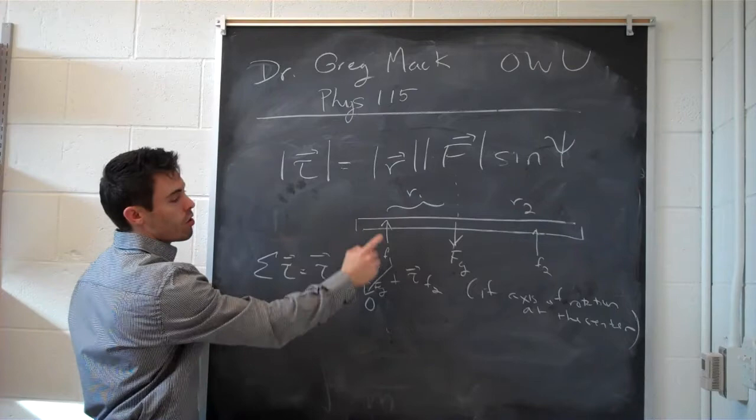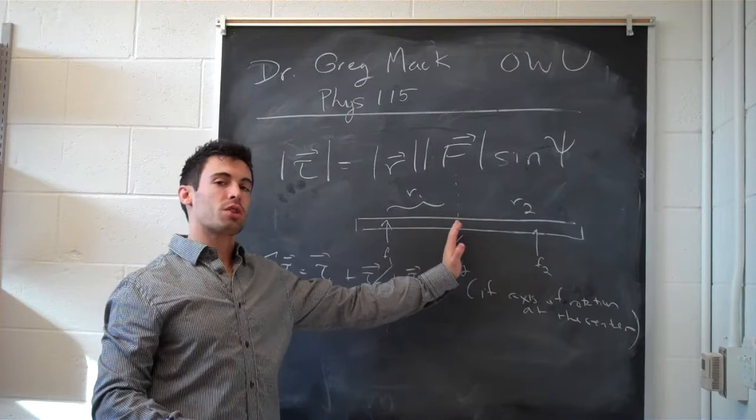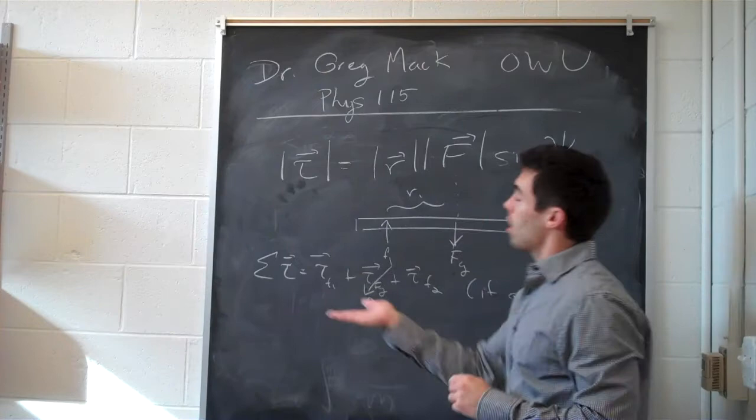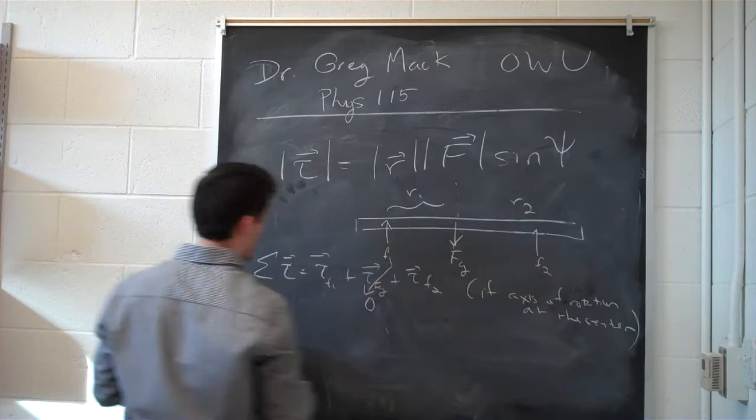So the sum of the torques equals zero, and we have to figure out what the directions of these torques are going to be. If the axis of rotation is right here, this force is pointed up at a distance this way with r. So we put our fingers in r, curl them in f, and it's pointed into the board.